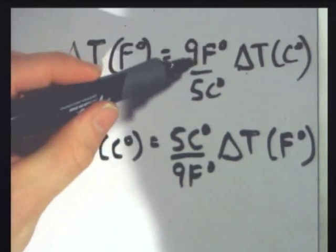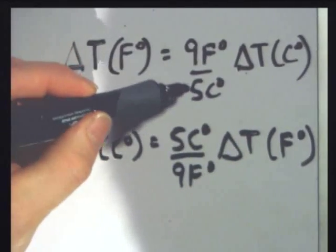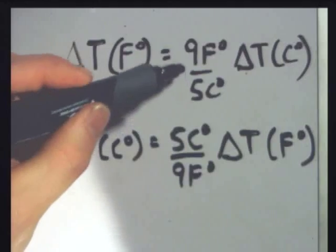A lot of times you'll see this 9 fifths written as 1.8, since 9 divided by 5 is 1.8. But you won't see '9 Fahrenheit degrees over 5 Celsius degrees' written out. I include that so you can see how the units work — that way you can make sure you get it right.